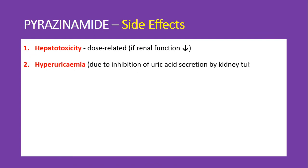Pyrazinamide can also lead to hyperuricemia due to inhibition of uric acid secretion by the kidney tubules, leading to a risk of gout. The mechanism is that both pyrazinamide and uric acid compete for excretion through glomerular filtration. Pyrazinamide wins the competition and gets excreted, while uric acid is left behind, increasing uric acid concentration and precipitating gout.